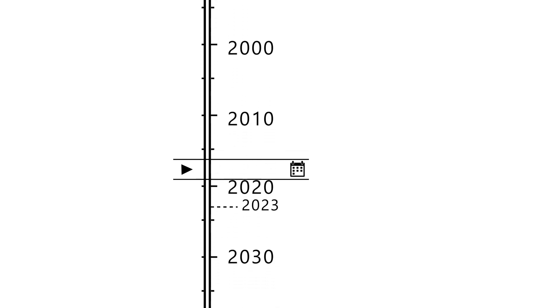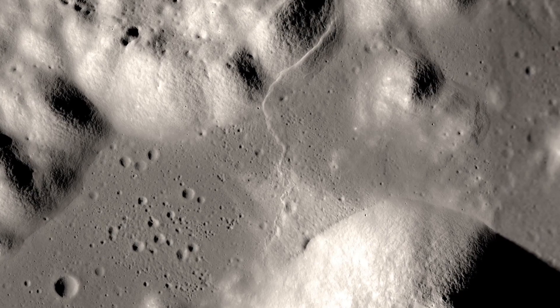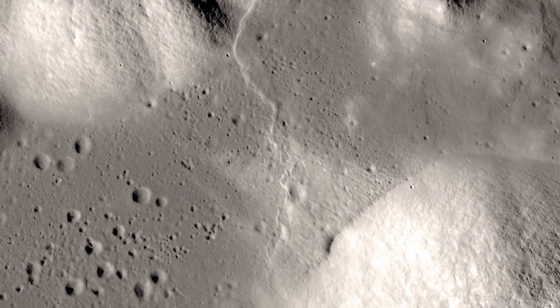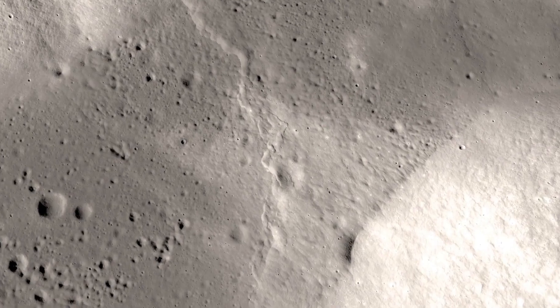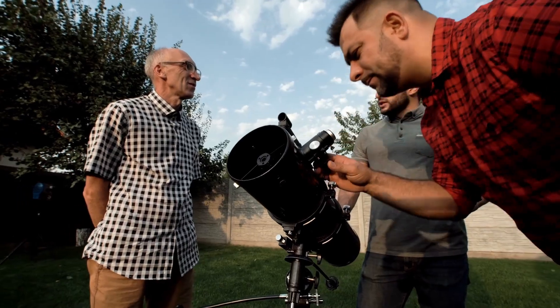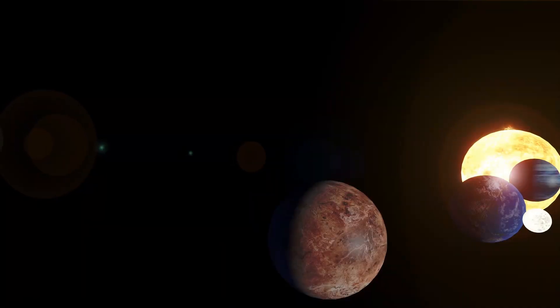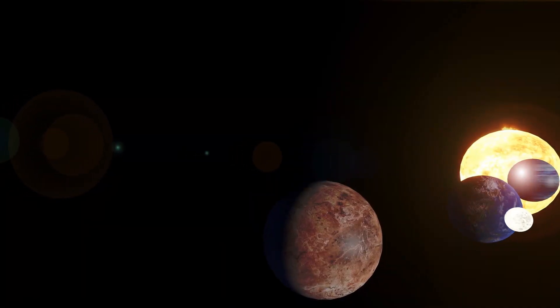Scientists eagerly awaited the first detailed images of this mysterious world, which revealed bright spots scattered across its surface, especially in a large crater known as Occator. These bright spots sparked immediate interest and speculation within the scientific community.